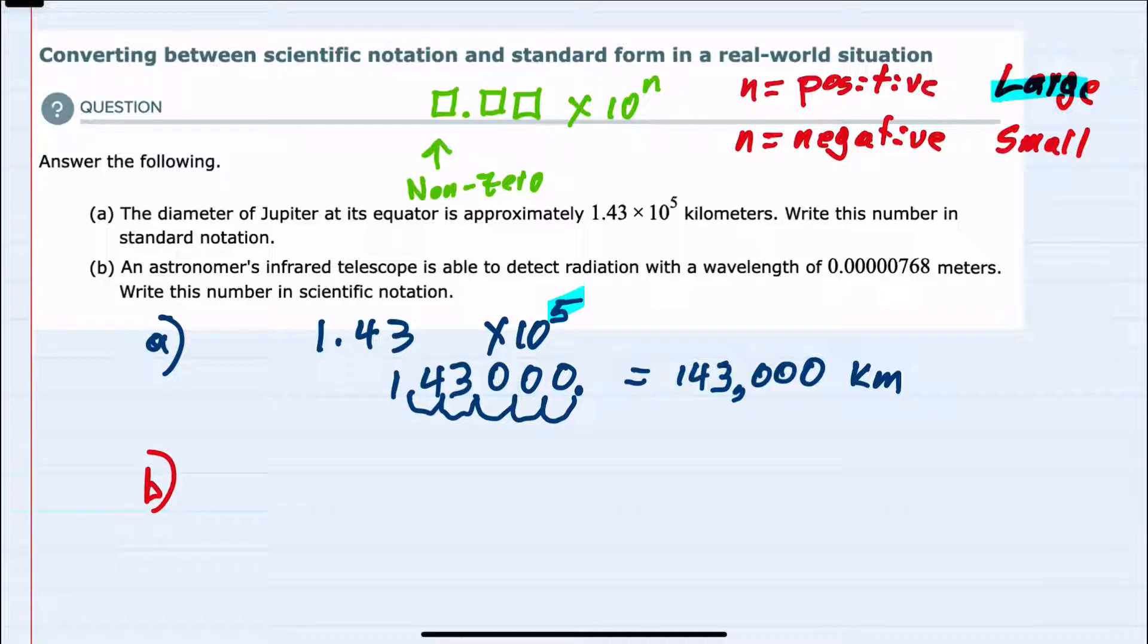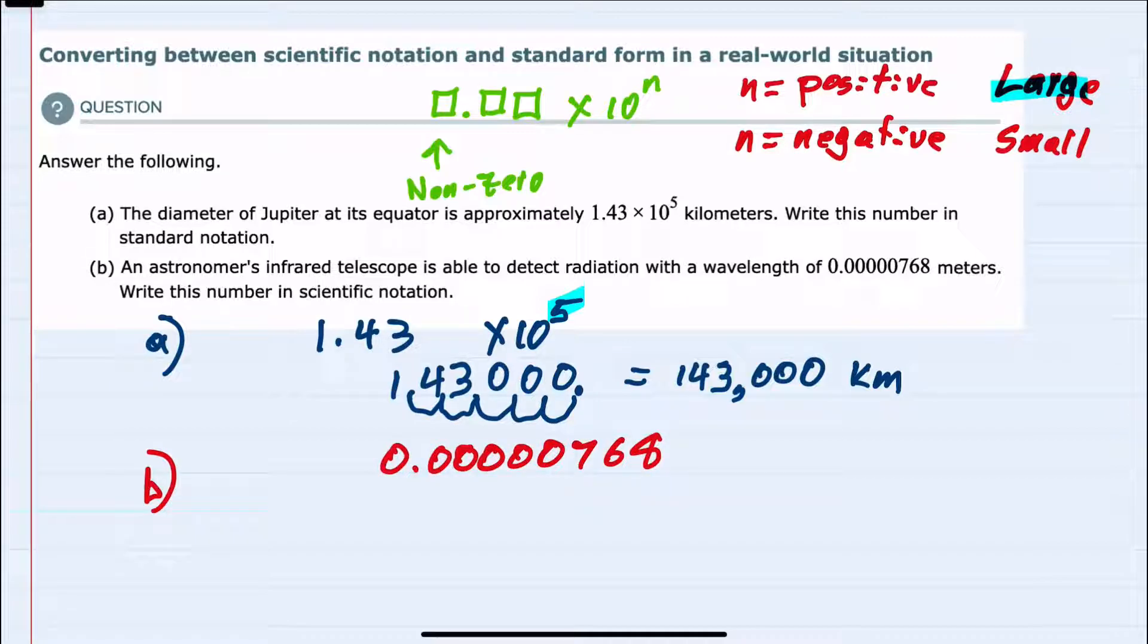we're told an astronomer's infrared telescope is able to detect radiation with a wavelength of 0.00000768 meters, and we need to write this in scientific notation. Here we're starting with a very small number. For small numbers, we're going to end up with negative exponents in scientific notation.